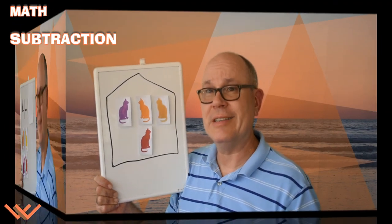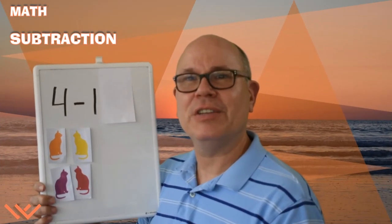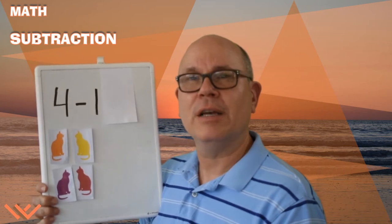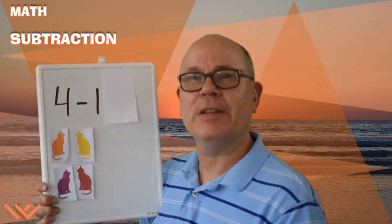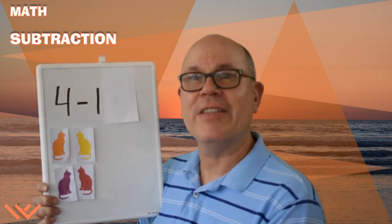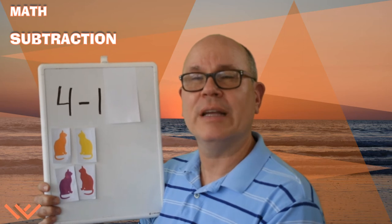Let's look at it as a number sentence next. Hi, mathematicians. Here's the number sentence: four minus one. Notice the minus sign looks different than the plus sign. The plus sign has a line that goes up and down and across. This one just has it going across.